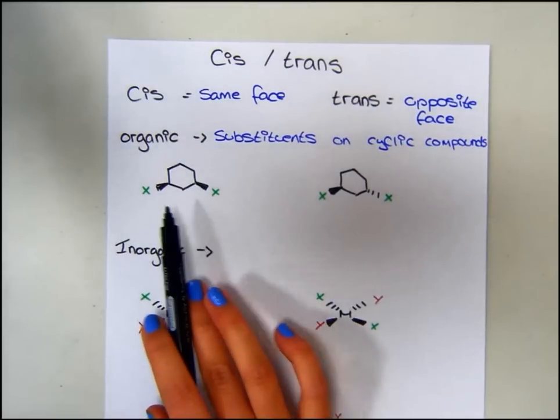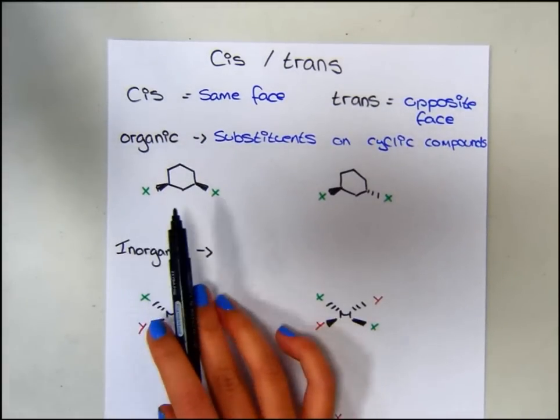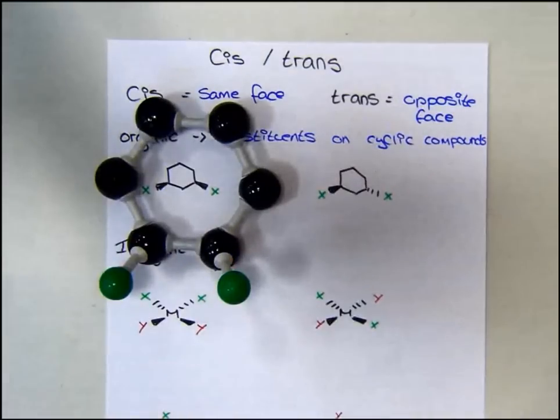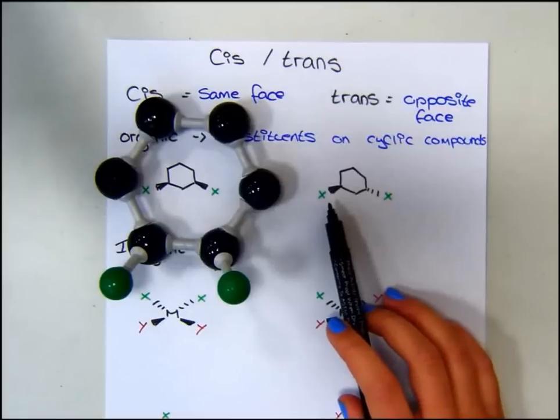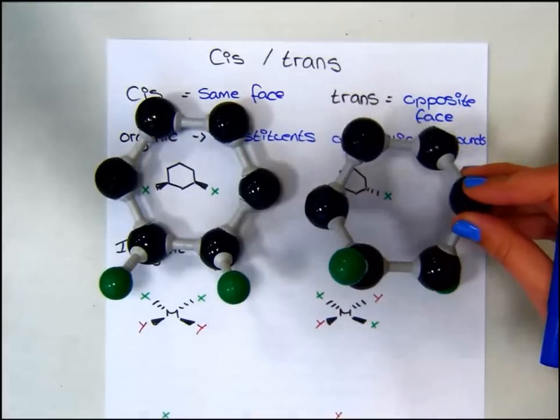Looking at the first isomer, you can see that the X substituents are both facing upwards. This looks like this. Whereas on the second one, we have one X facing upwards and one X facing downwards. This looks like this.